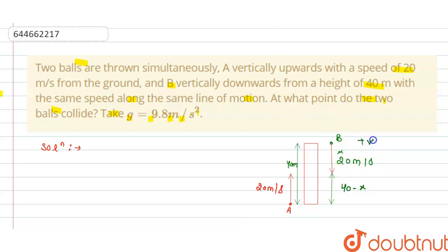Taking upward positive direction and downward negative, we get for ball B the equation of motion is x = ut + ½gt². This is equation 1.